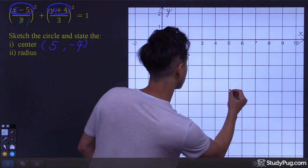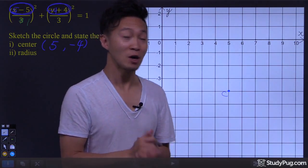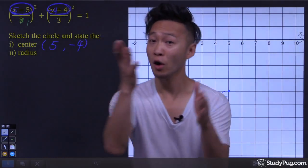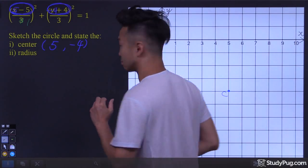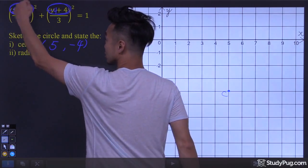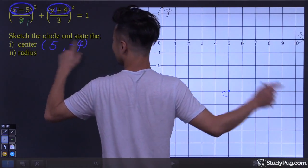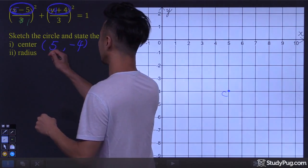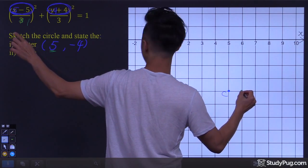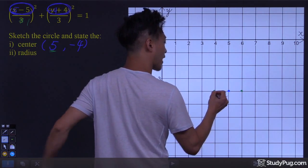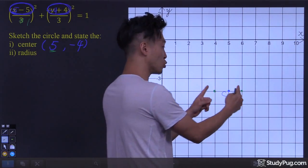The center is at (5, negative 4), right here. C stands for center. With the center in place, we are now ready to graph the ellipse. In the x-direction, we're going to move one unit to either side of the center — one unit to the right side, and one unit to the left side. So in the x-direction, we've found two points on the ellipse.